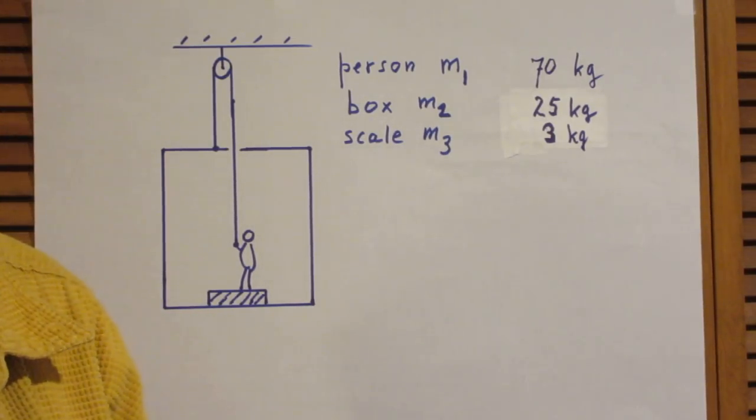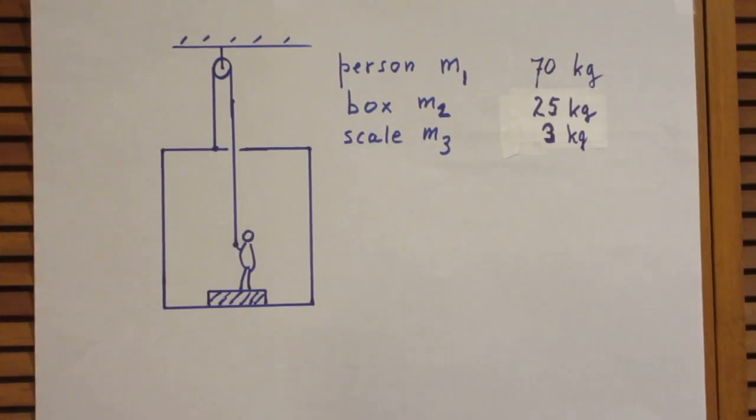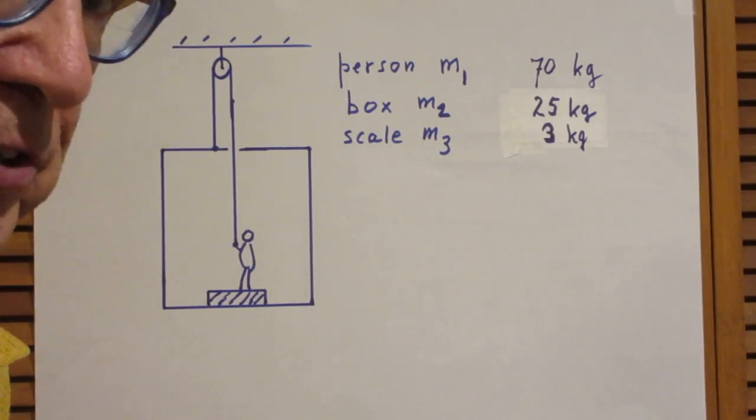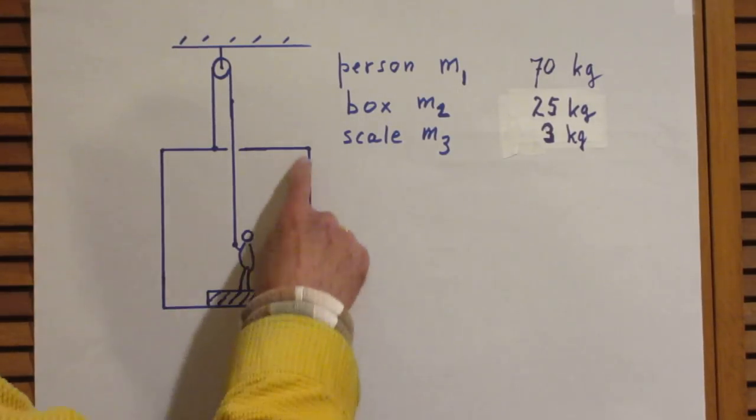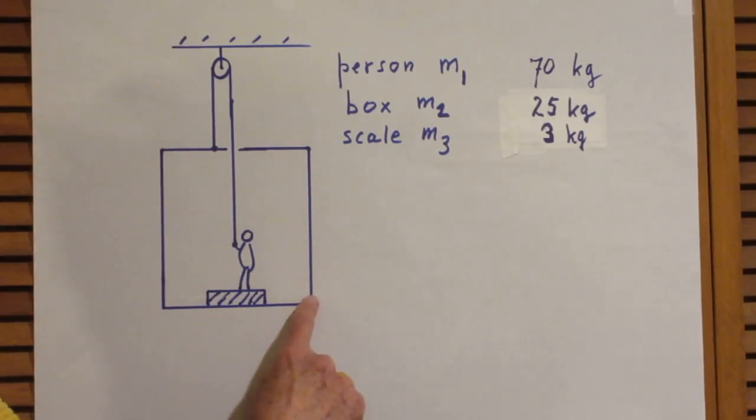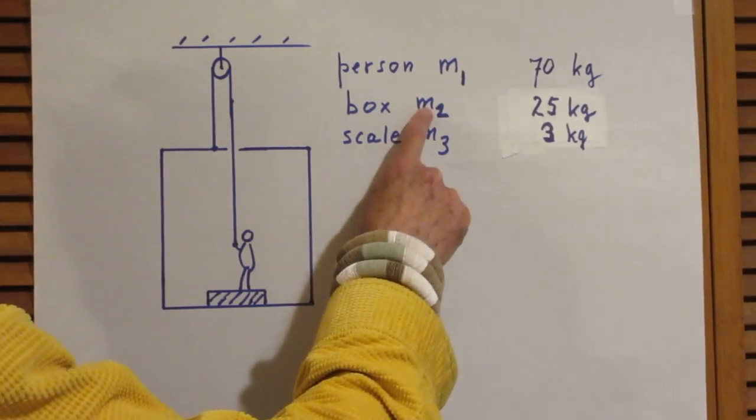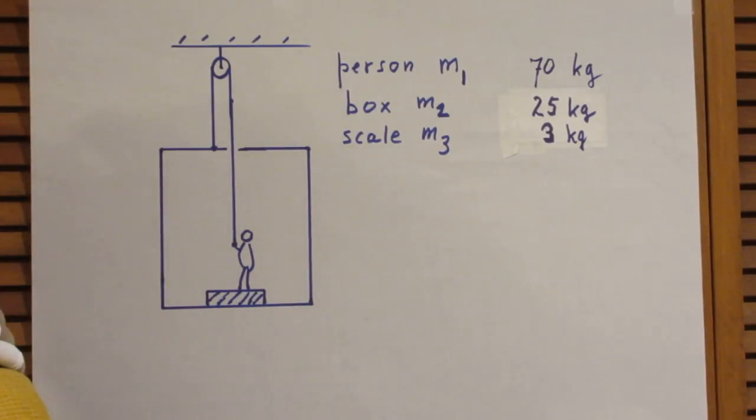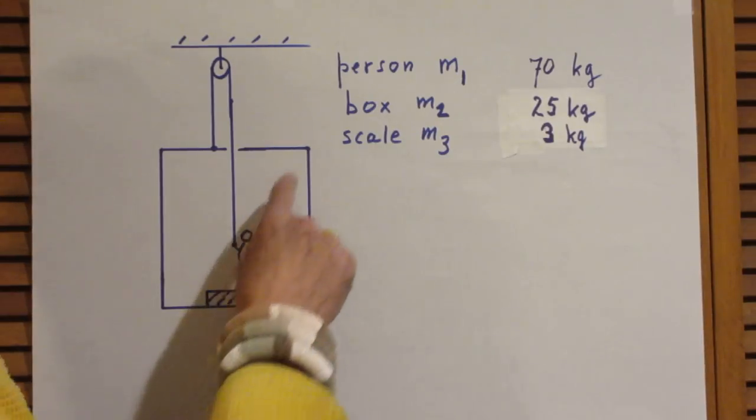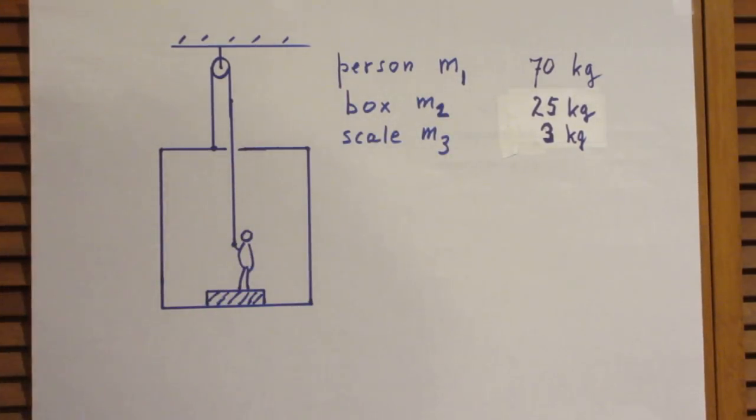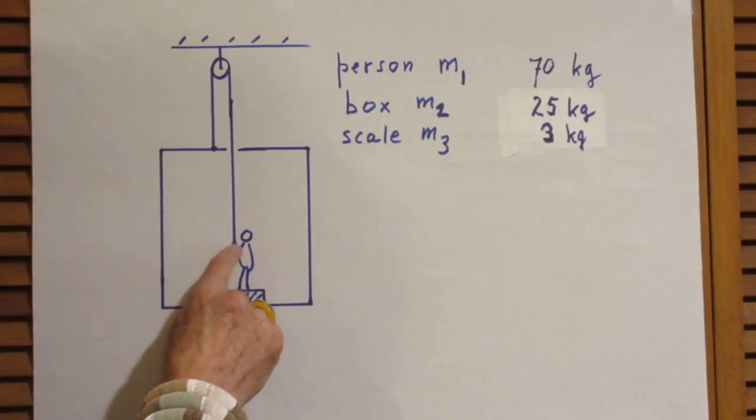It's really easy. All right, this is a very large box, and the box has a mass M2. In the box stands a person, and her mass is M1, and she is standing on a scale at the bottom here which has a mass M3.